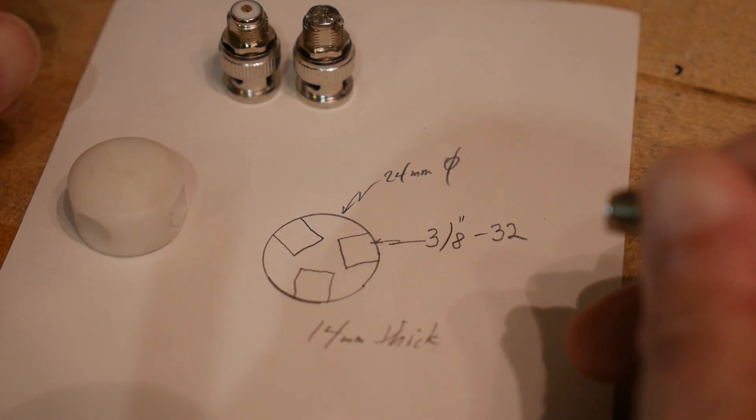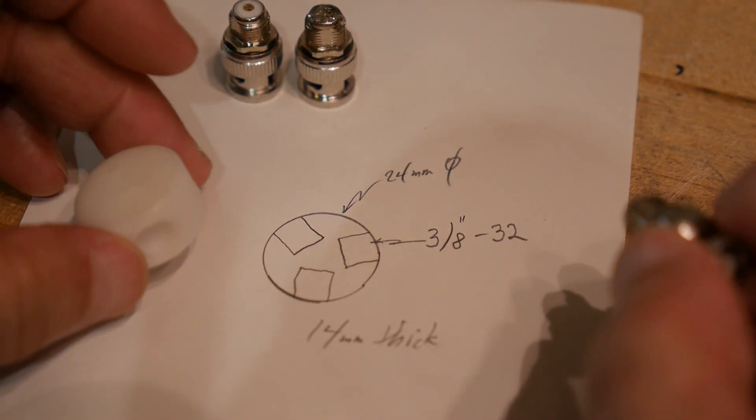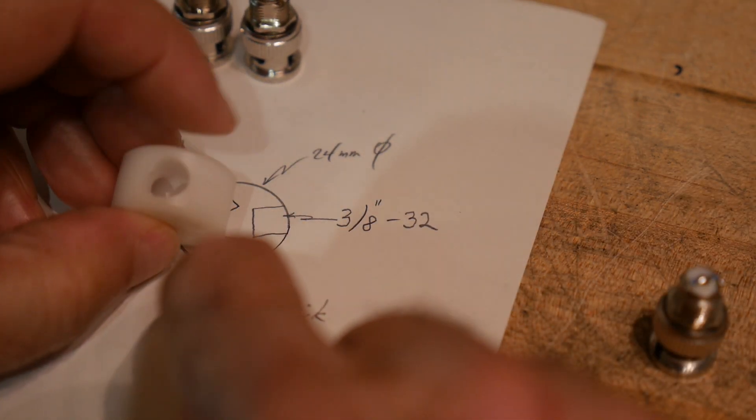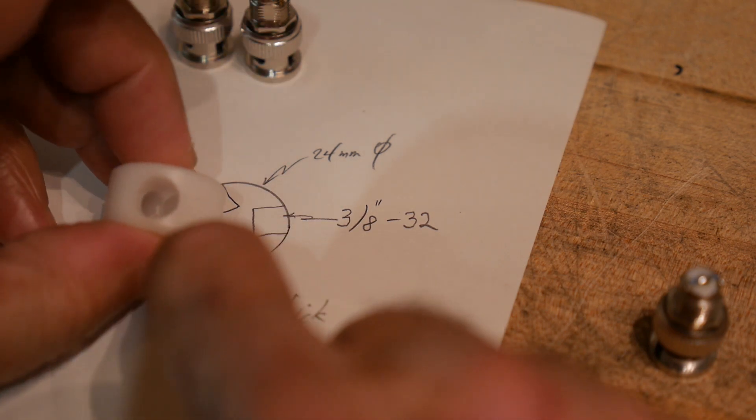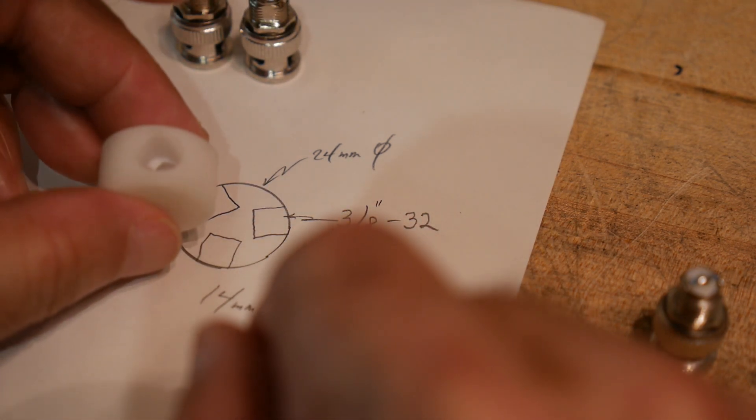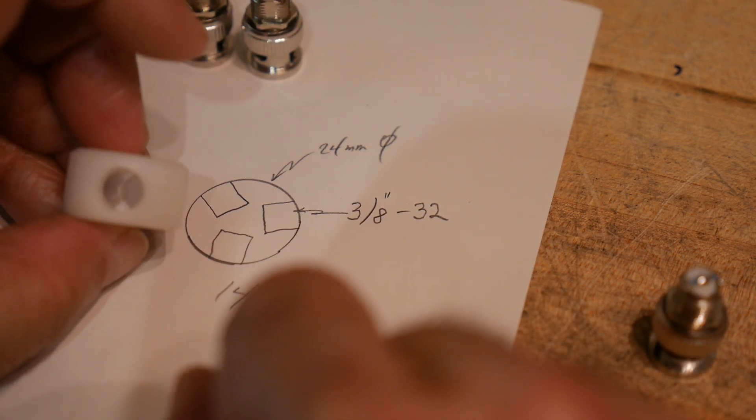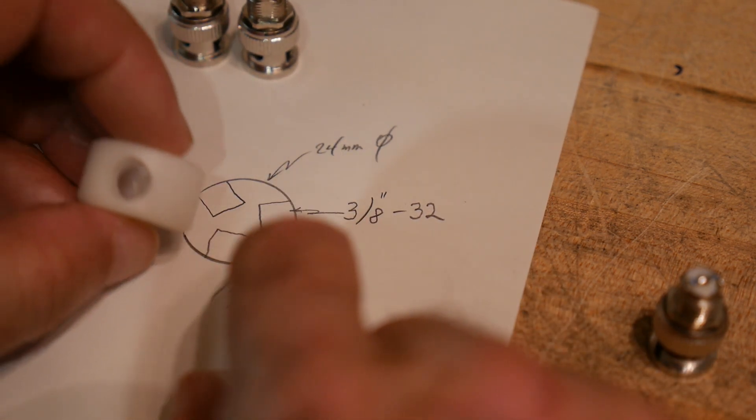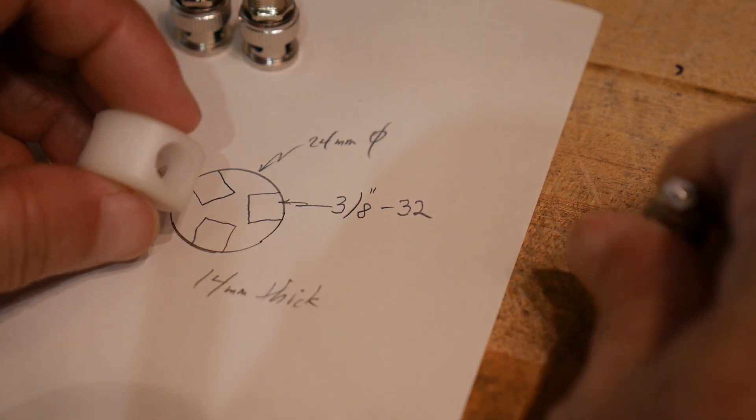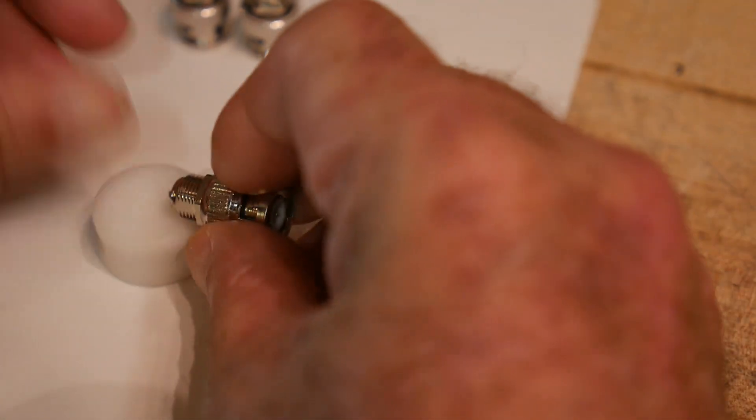So that's on order. I have made what I can - I've taken a piece of Delrin and put three holes in it. So the Delrin will be insulating and should hold up just fine. When I get my tap I'll tap these holes and thread these guys in and I should have a nice little unit.